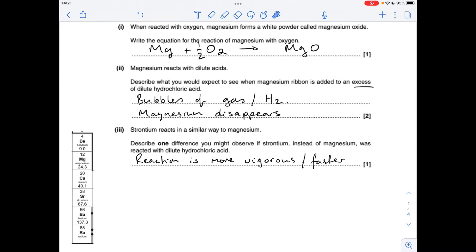And then for the next part, one difference you might observe if strontium was reacted instead of magnesium. So I've just got group 2 here, there's strontium further down the group than magnesium, so the reaction would be more vigorous or it would be faster.